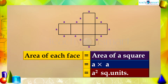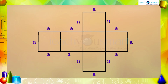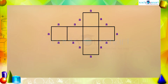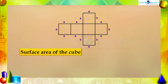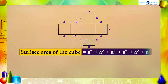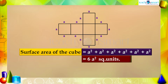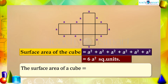So the surface area of the cube is the sum of the areas of six faces: a² + a² + a² + a² + a² + a² = 6a² square units. Generally, we can say that the surface area of a cube of edge 'a' units is 6a² square units.